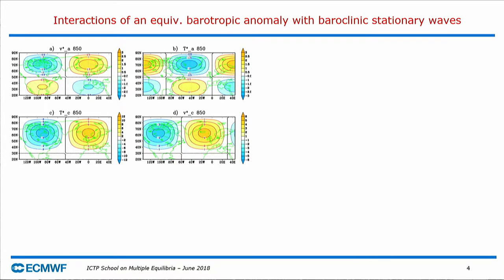Here is an idealized version showing what happens when an equivalent barotropic anomaly with a dipole structure in the y-direction interacts with a baroclinic wave that has a broader meridional scale. Looking at the 135°W to 45°E sector: at the top, an idealized NAO-like anomaly with V and T out of phase; below, the stationary waves where, in the real climatology, V and T are positively correlated. A 15-degree shift between these fields is used for these idealized pure sinusoidal functions.